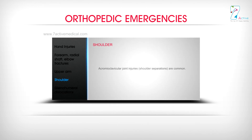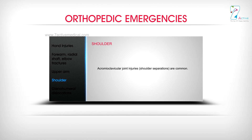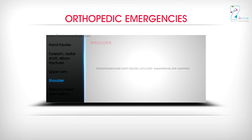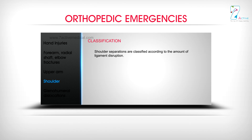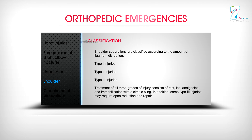Shoulder: Acromioclavicular joint injuries — shoulder separations — are common. They are classified according to the amount of ligament disruption: Type 1, Type 2, and Type 3 injuries. Treatment of all 3 grades consists of rest, ice, analgesics, and immobilization with a simple sling. In addition, some Type 3 injuries may require open reduction and repair.